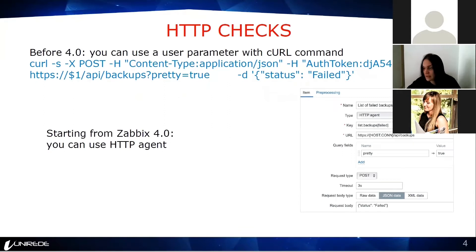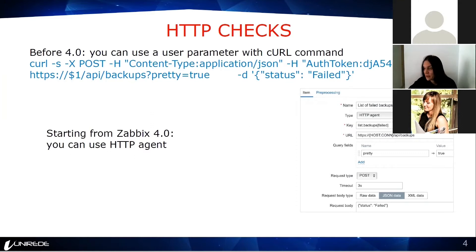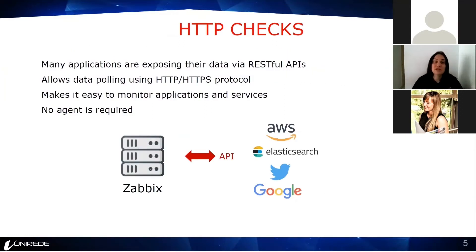The first feature is the HTTP agent item. Before Zabbix 4 we used to use a custom bash or Python script using curl to get data from an external HTTP website. But now from Zabbix 4 we can do it out of the box. With HTTP checks, we don't need any agent to collect this information. It's a very easy way to collect information from any application you can imagine.